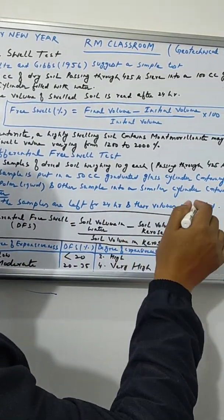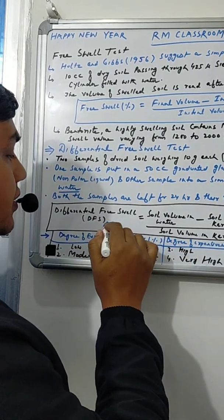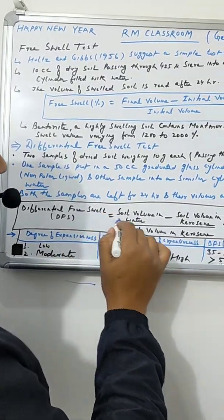After 24 hours, we have to take the final volume of the soil. The differential free swell can be computed by soil volume in water minus soil volume in kerosene.